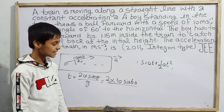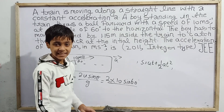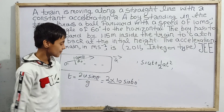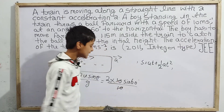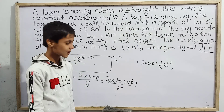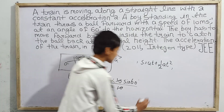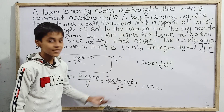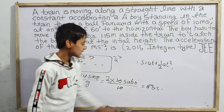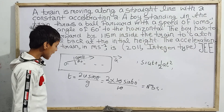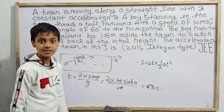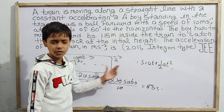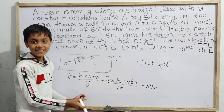Using g = 10 m/s² gives an answer very close to the correct value, since in physics we can never find an exact value anyway. With g = 10, the 10s cancel: T = 2 × sin 60° = 2 × (√3/2) = √3 seconds. The unit is seconds because all values were substituted in SI units.